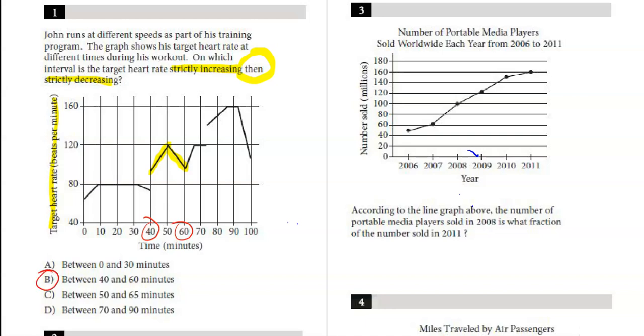If you look at part A, it says between 0 and 30. Well, between 0 and 30, it increases but then it flat lines and maintains, so that's not increasing then decreasing. Every other interval is going to have a situation like that where it's not going straight up and then coming back straight down.